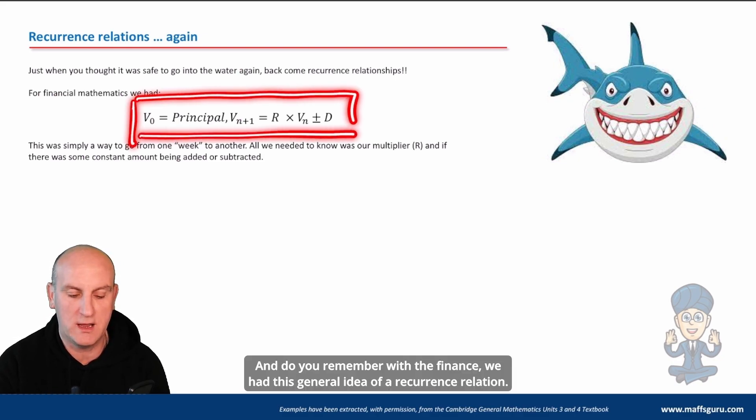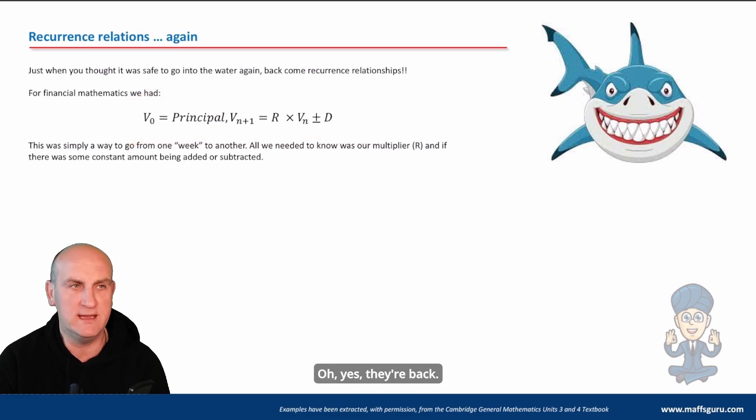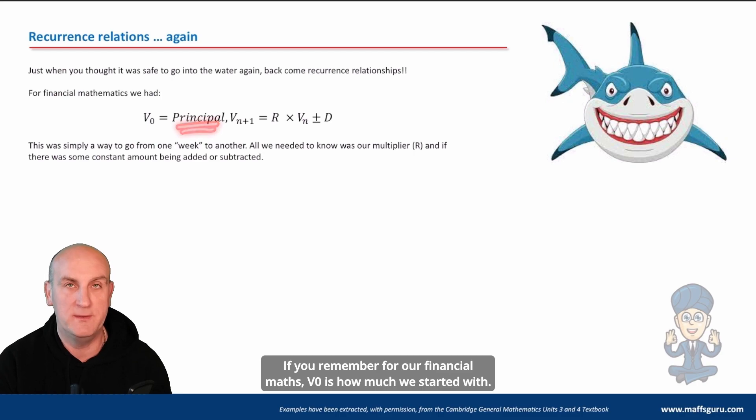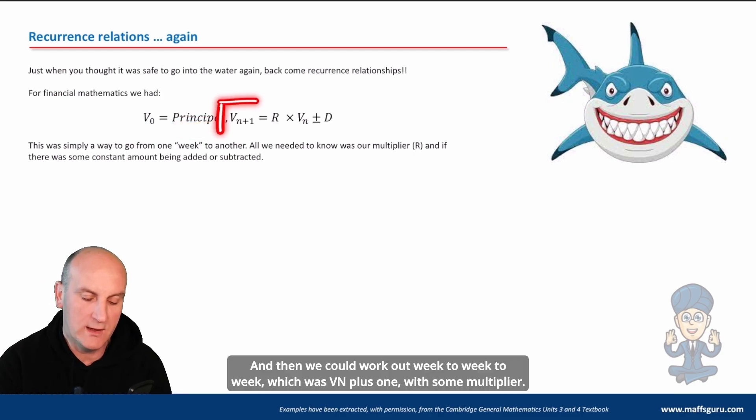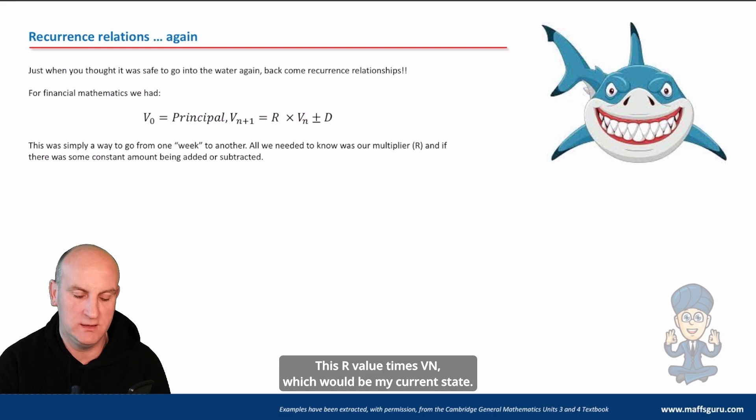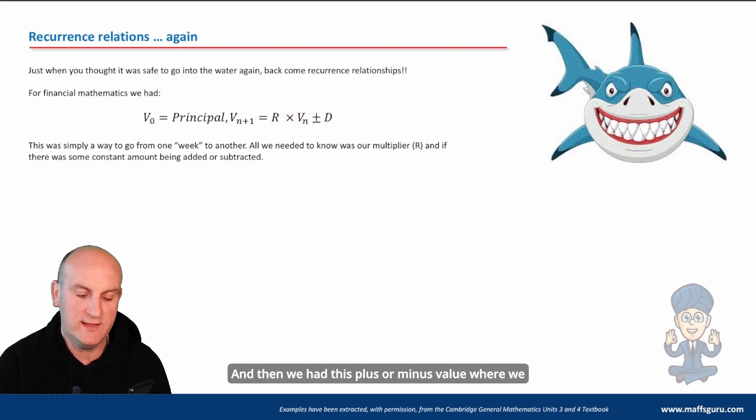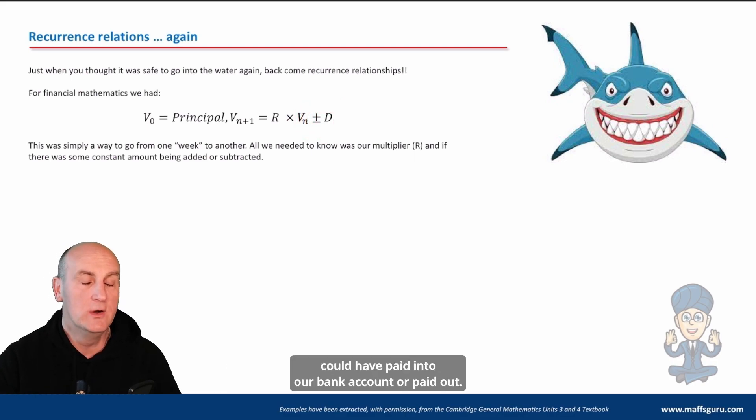We had this general idea of a recurrence relation where V₀ stood for our principal amount, if you remember, for our financial maths. V₀ is how much we started with, and then we could work out week to week which was Vₙ₊₁ with some multiplier, this R value times Vₙ, which would be my current state, and then we had this plus or minus value where we could have paid into our bank account or paid out.